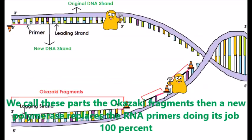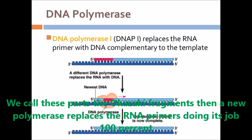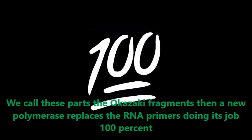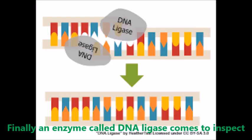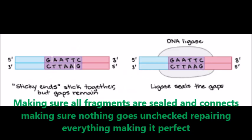Then a new polymerase replaces the RNA primers, doing its job a hundred percent. Finally, an enzyme called DNA ligase comes to inspect, making sure all fragments are sealed and connected, making sure nothing goes unchecked, repairing everything, making it perfect.